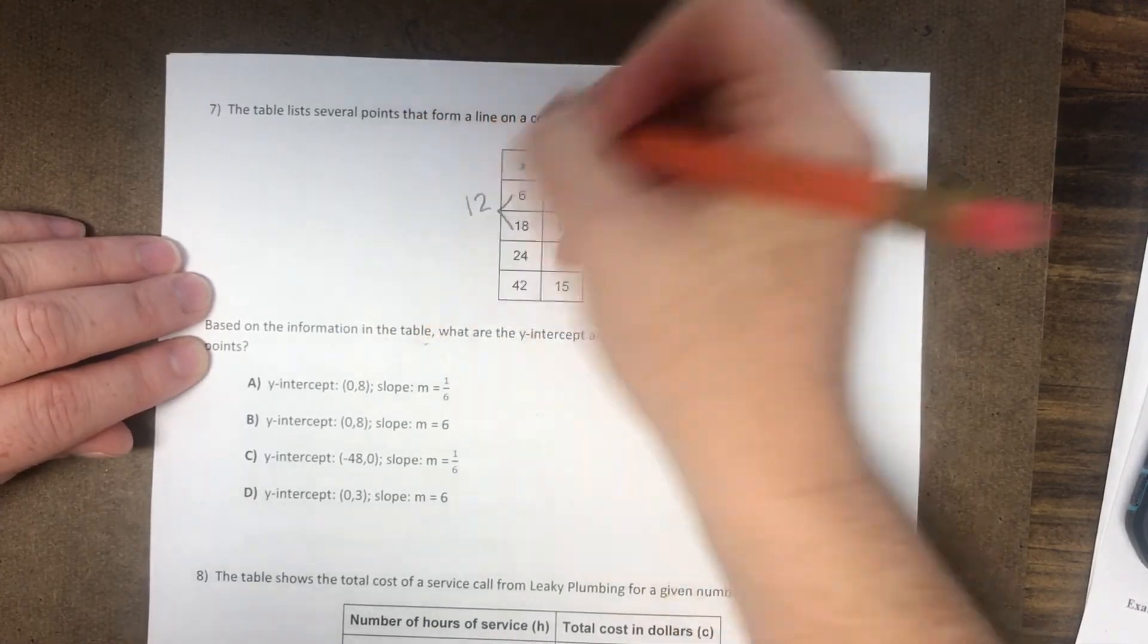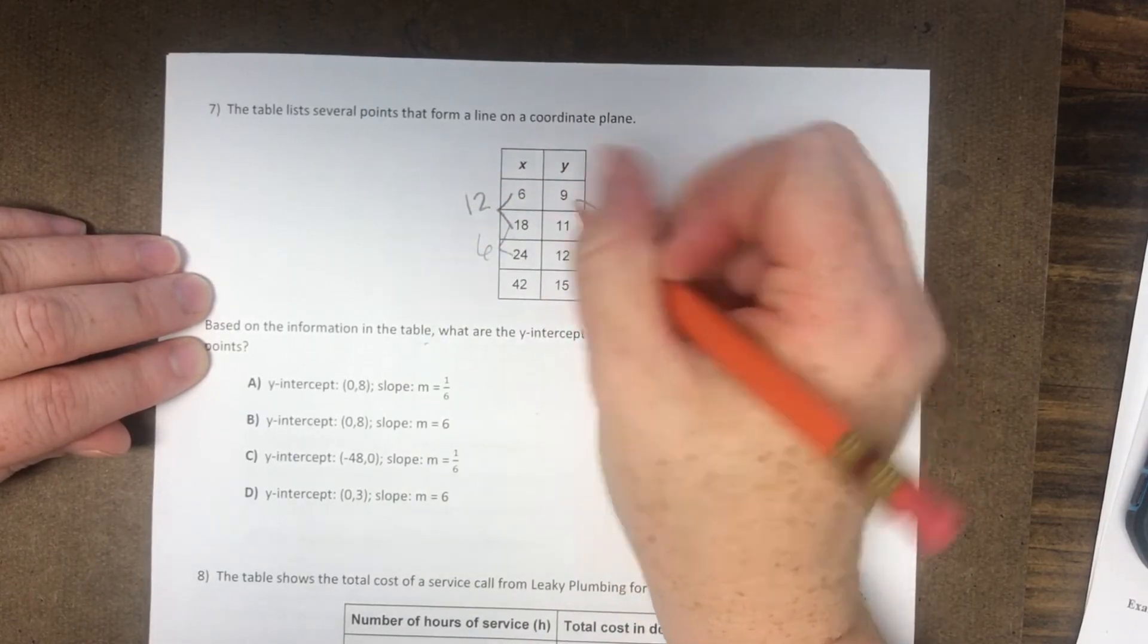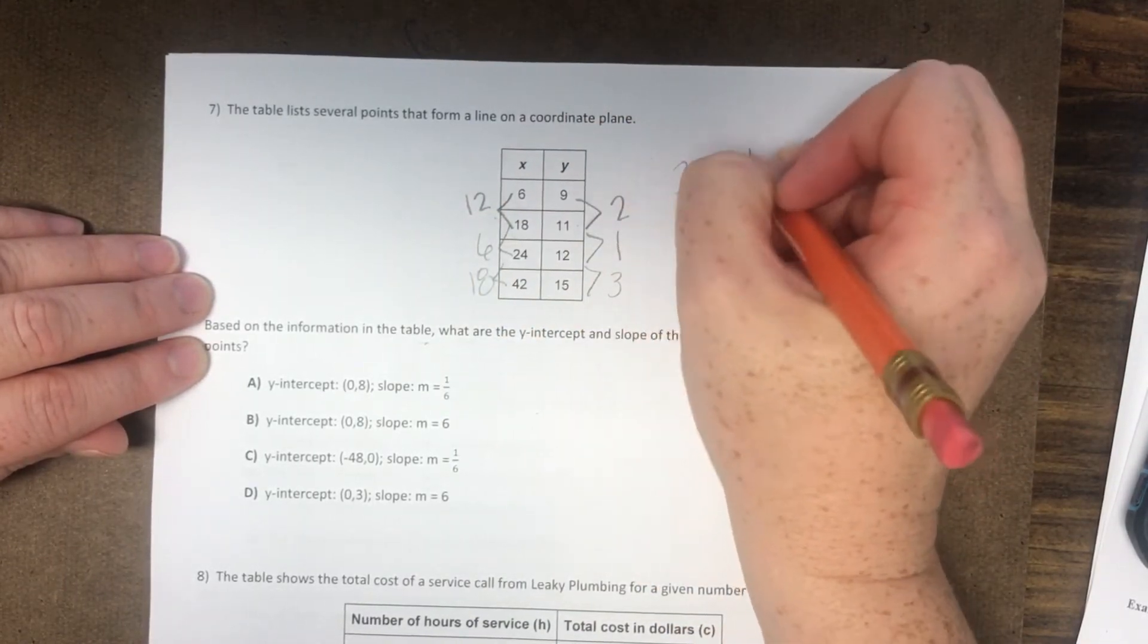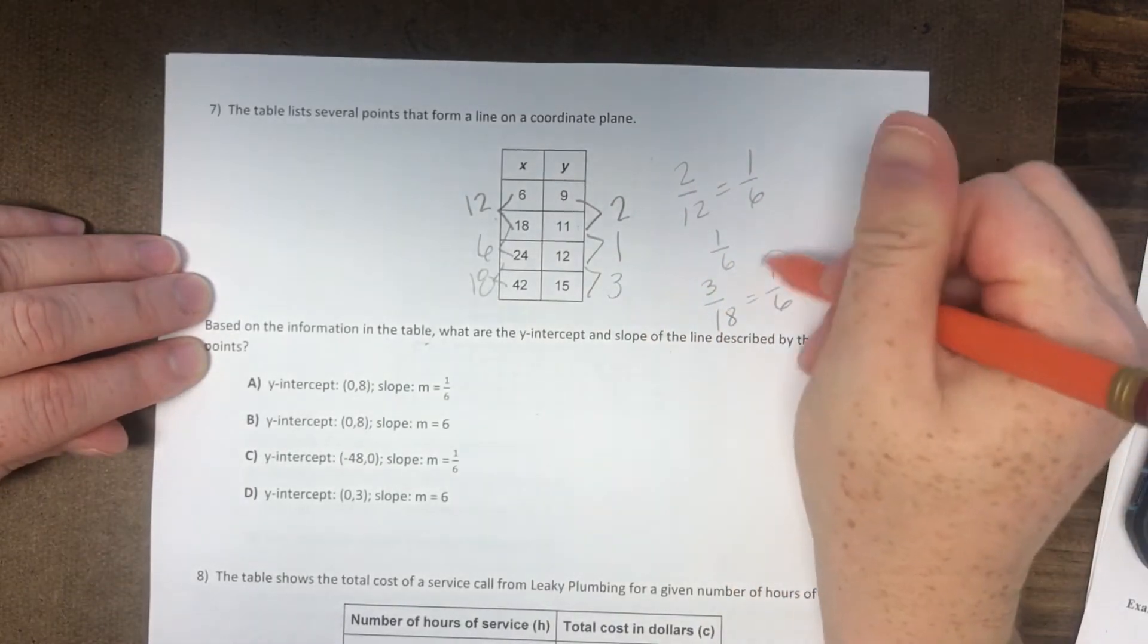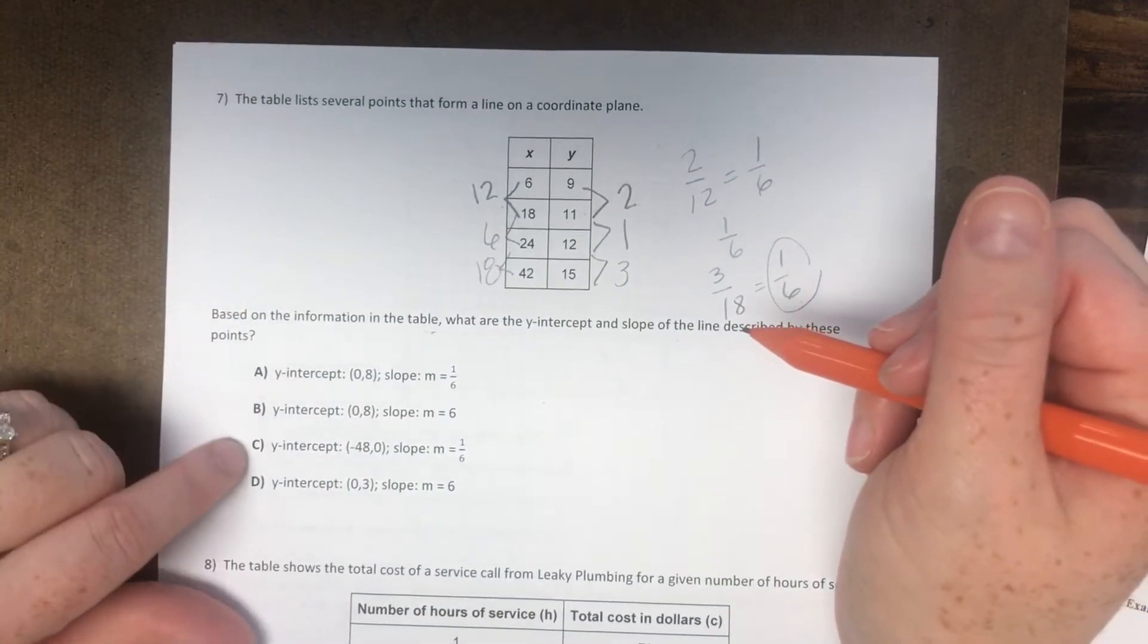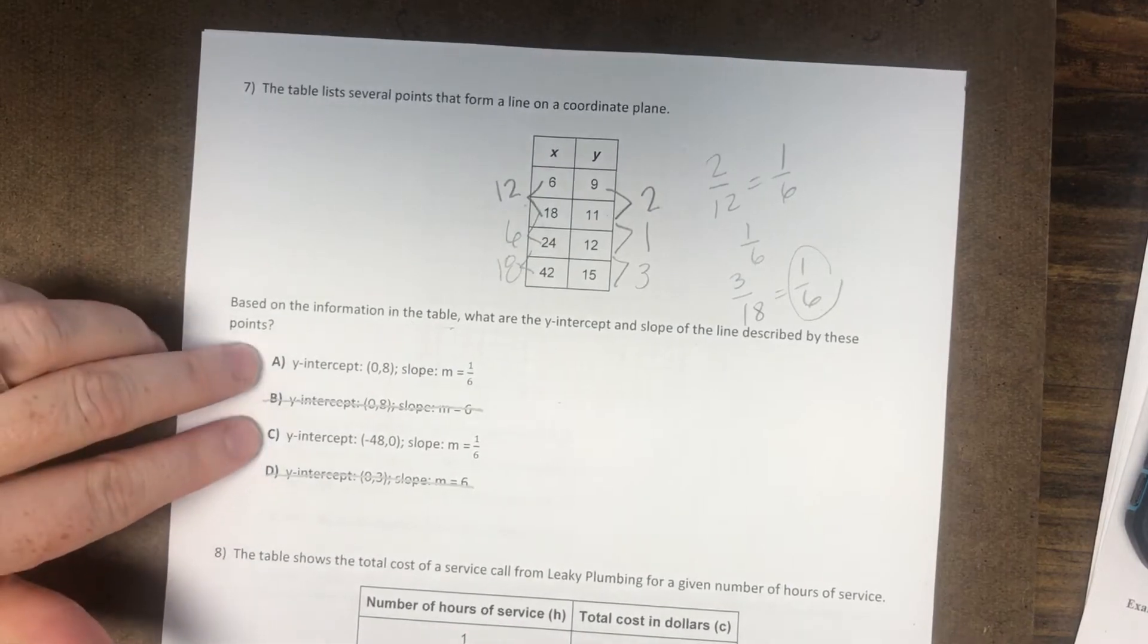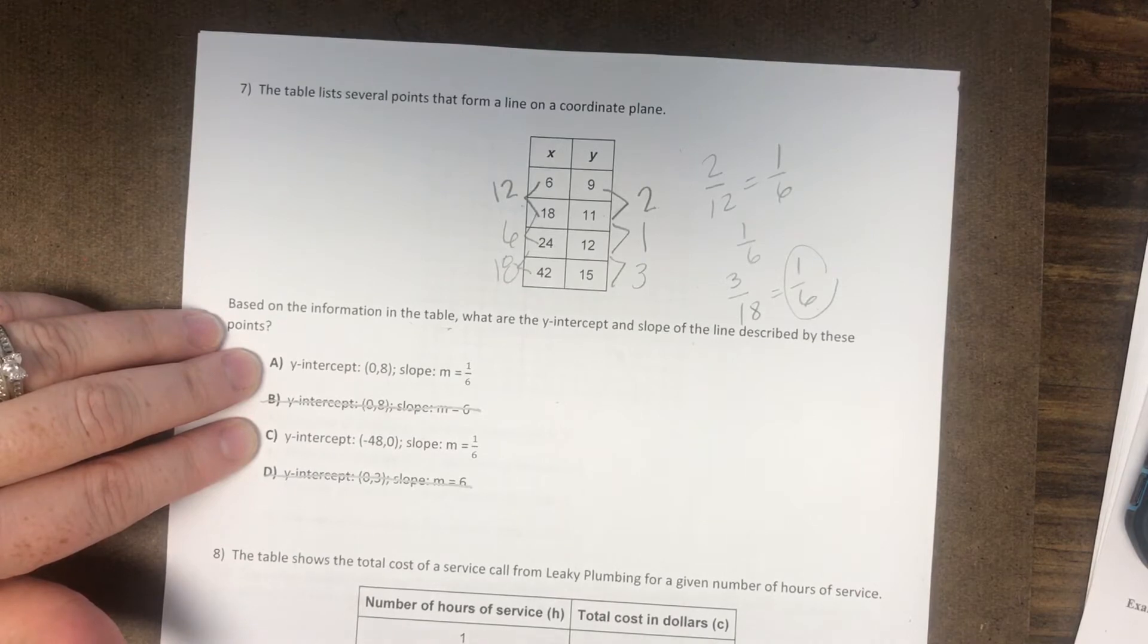So we found the slope by finding the rate of change. So the rate of change here is 2. From here it's 12. The rate of change here is 1, 6, 3, 18. So if you put these over each other, change in Y over change in X, it's all going to reduce to 1, 6. So that is your slope. So if you look for your answer choices, it's going to be either A or C. So you're going to mark out B and D.